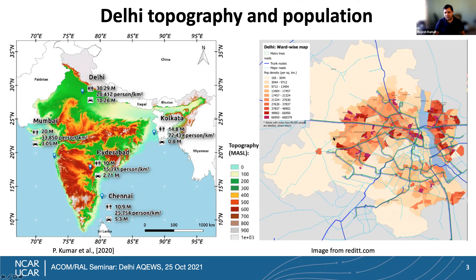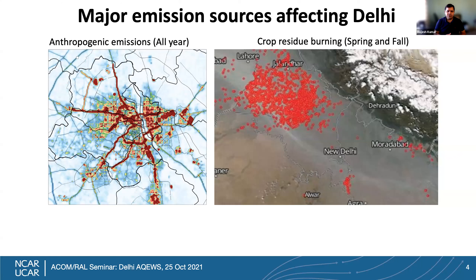Looking more closely at the population density distribution, there are pockets in Delhi where it exceeds about 67,000 people per kilometer square, more on the eastern side of the Yamuna river. This high human activity leads to a lot of anthropogenic emissions. This is the spatial distribution of anthropogenic PM2.5 emissions in Delhi — annual average, meaning these sources are active throughout the year, with the road network and Yamuna river visible in the emissions pattern.